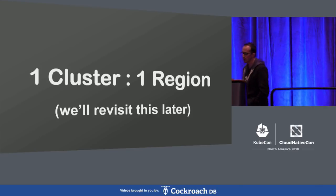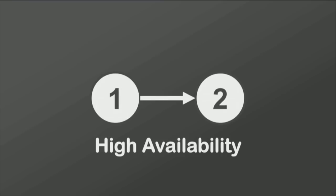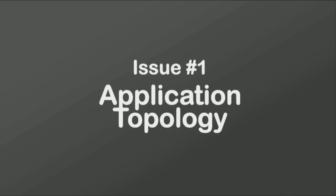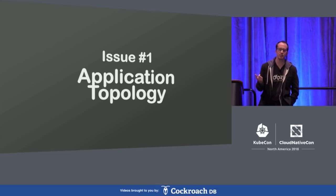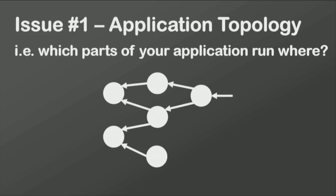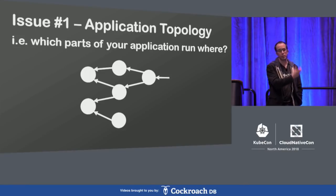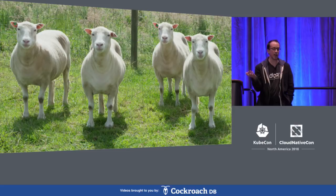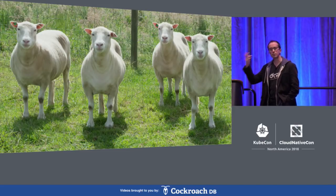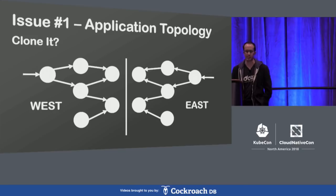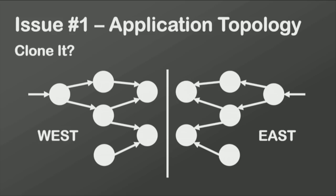So, high availability — going from one to two. What is so hard about this? Why can't we just do this out of the box? Well, your application probably wasn't designed for two clusters — it was designed for one region. Now that you have two clusters, which parts run on US East and which parts run on US West? One strategy is cloning everything. The same microservices you have in US East can run just as well in US West. For one to two, that's a perfectly reasonable strategy, and we'll see where that breaks down as we go along.